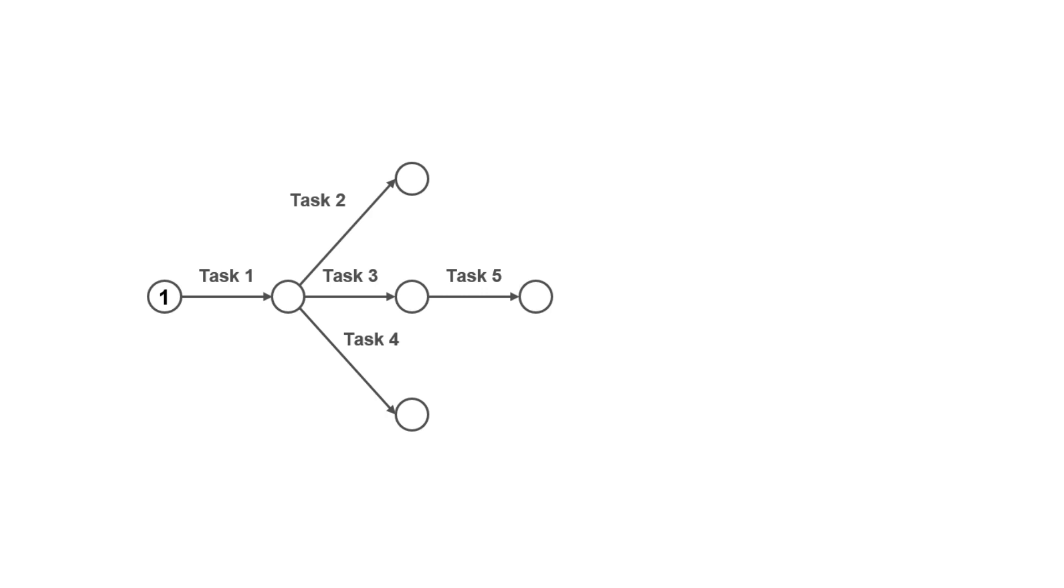The predecessors for task 6 are tasks 2 and 3. But since tasks 2 and 3 start from the same node, they cannot end in a common node. That's one rule of thumb we discussed in the theory lesson. Further, task 5 is dependent only on task 3 and not on task 2. Therefore, we need to end tasks 2 and 3 in two different nodes but connect task 3 to the node task 2 ends using a dummy activity to show that task 3 is a predecessor for task 6. Like so. Then we can draw task 6 from the node task 2 ends.